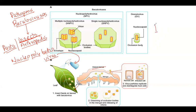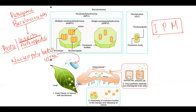Baculoviruses - or nucleopolyhedral viruses - have no negative effect on any other species: plants, animals, mammals, birds, fish, or even other insects. They attack only specific species of insects. This kind of pest management using biological agents is called IPM - Integrated Pest Management. This helps the ecosystem, reduces pollution, and saves useful insects like honeybees and butterflies because these are species-specific pathogens that don't kill useful insects.